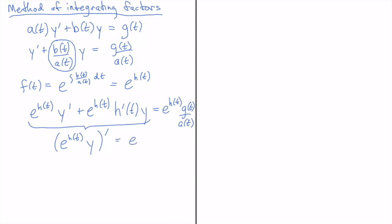And on this side we get e to the h of t g of t over a of t. And then I can take an antiderivative e to the h of t y is equal to the antiderivative of e to the h of t g of t over a of t.